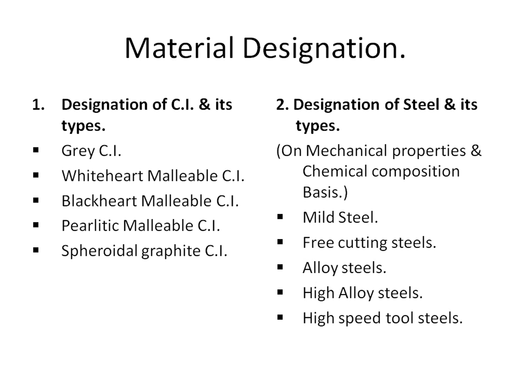Most of the engineering components are made up of material which have iron as its main constituent. Such materials are called as ferrous material. The ferrous materials are classified into two types: cast iron and steel. Cast iron is an alloy of ferrous and carbon material which have higher carbon percentage up to 2 to 4 percent. And the steel have comparatively lower carbon percentage.